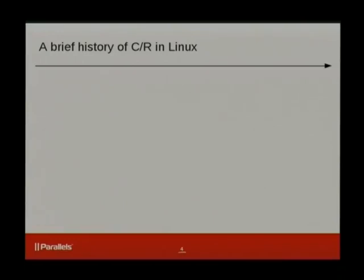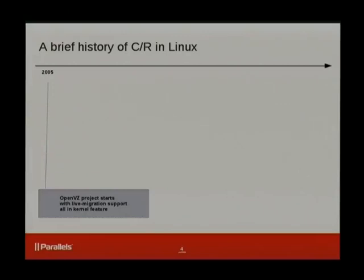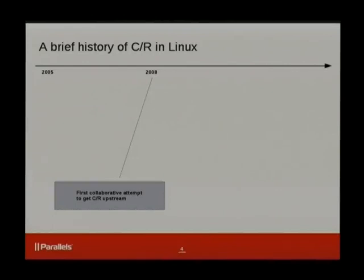The roots of the project can be traced back to 2005 when we first released the OpenVZ project. This project had the checkpoint restore feature from the very beginning — it was a kernel-only implementation, a big kernel module which did everything we needed. Later on, when we started submitting our functionality upstream, we came to a state where we needed checkpoint restore upstream, and by that time it turned out there were other parties interested in this as well — IBM, people from the MOSIX project, and others.